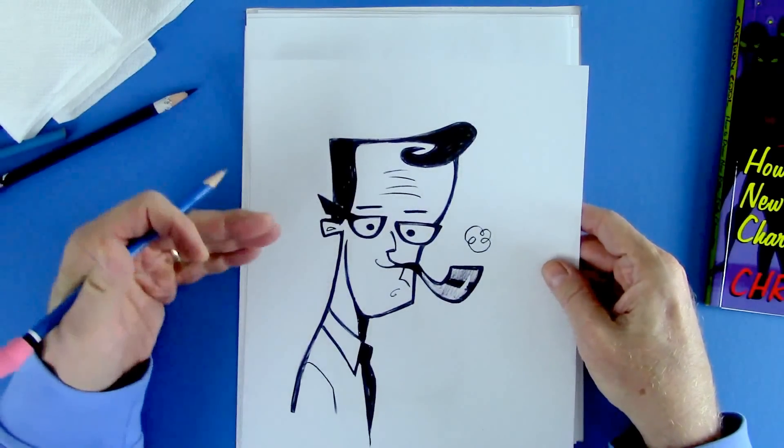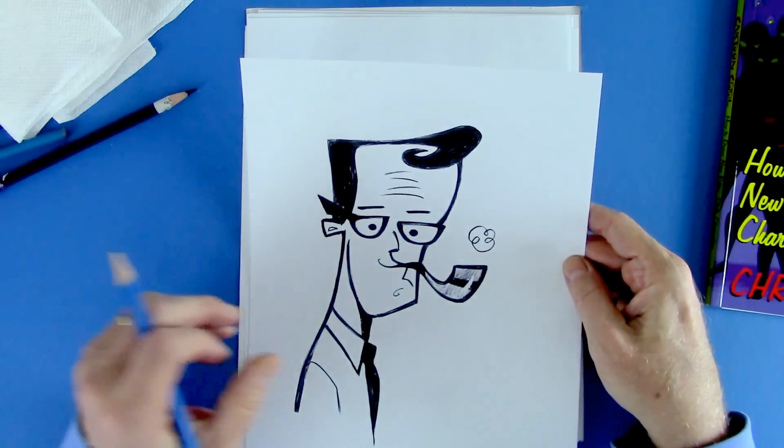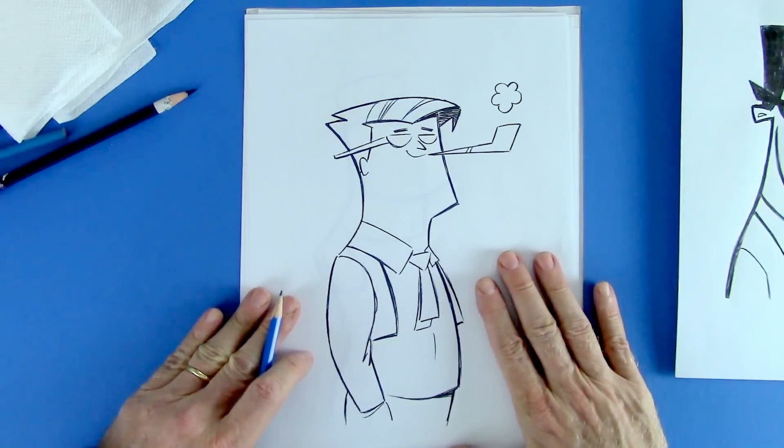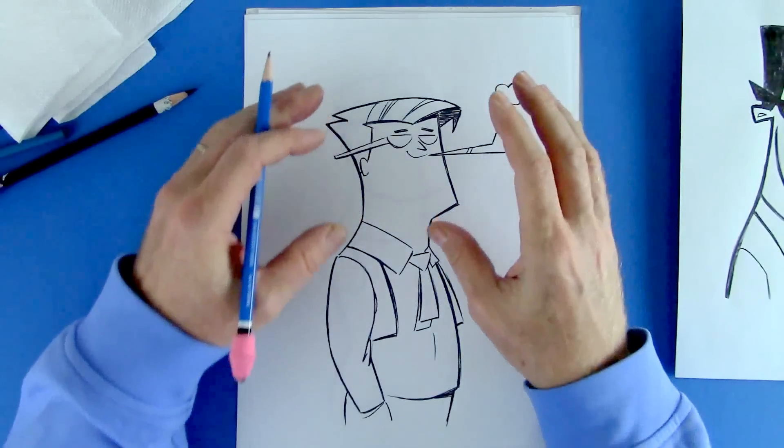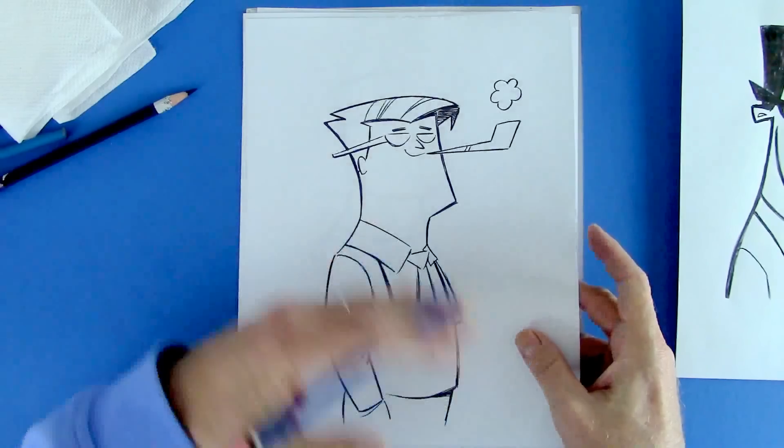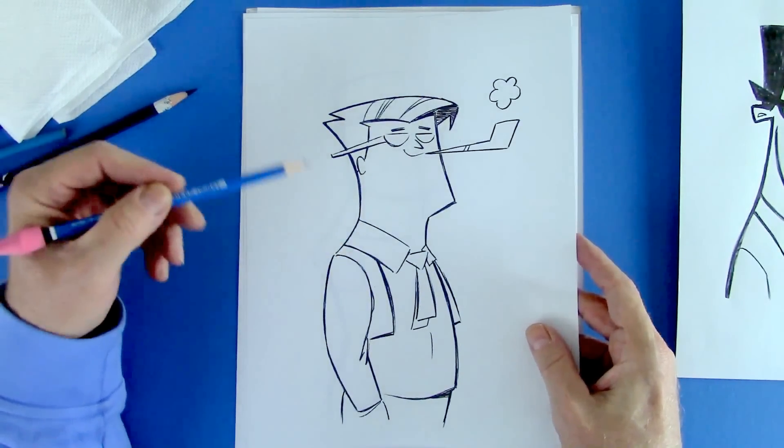So I did a retro dad like this. I thought, well how do we make him even a little bit more modern? So I came up with this guy and he's got still the same kind of dad qualities. I want to show you how we do that, how we put these stereotypes onto the character.